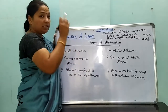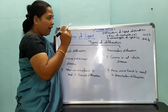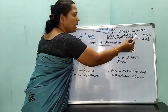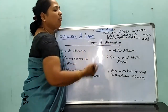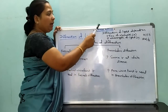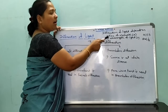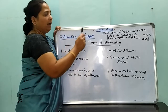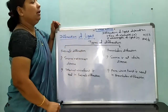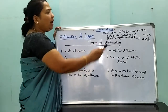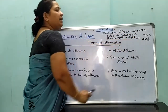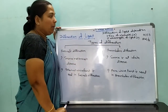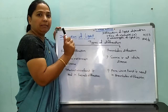Diffraction of light depends on two factors: first, the size of the obstacle, denoted by 'a', and second, the wavelength of light, denoted by lambda. These two factors — size of the obstacle or slit and the wavelength of light — affect diffraction.